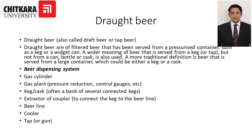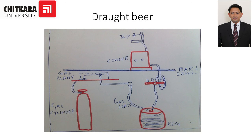All the equipment required to serve draught beer is known as a beer dispensing system. It includes a gas cylinder, gas plant, keg or cask, extractor or coupler, beer line, cooler, and a tap or gun. In the dispensing system diagram, below the bar level you have a keg or cask and a gas cylinder with carbon dioxide. Above that there is a cooler, and the beer from the keg and carbon dioxide from the cylinder reach the bar top, from where we draw the beer from the tap.